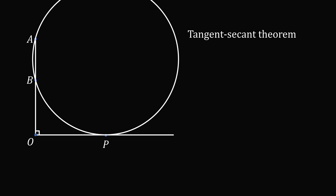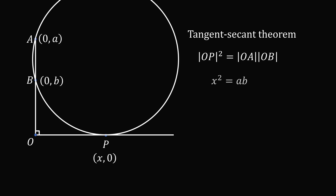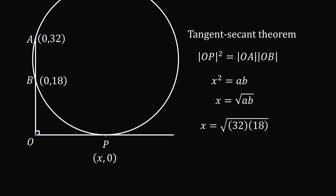From here we just need to figure out the distance OP, and we can do that using the tangent-secant theorem. The square of the length OP equals the length OA multiplied by the length OB. OB has distance lowercase b, and OA has distance lowercase a, and OP equals x. So substituting in, x squared equals a times b — exactly what we had before — giving x equals the square root of ab. Recalling that a equals 32 and b equals 18, x equals the square root of 32 times 18, giving x equals 24. And that's the answer.